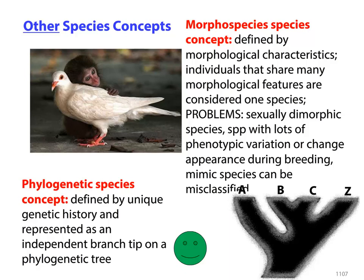The morphospecies concept, as you wrote down from your textbook, is defined by morphological characteristics — you're looking at those that share many features and consider them one species. Problems with this include sexually dimorphic species, which makes things really challenging, and you can have mimics. The viceroy and monarch example is an example of mimicry — write that down. The phylogenetic species concept is defined by unique genetic history: you have an independent branch tip on a phylogenetic tree, and that's considered to be a species.